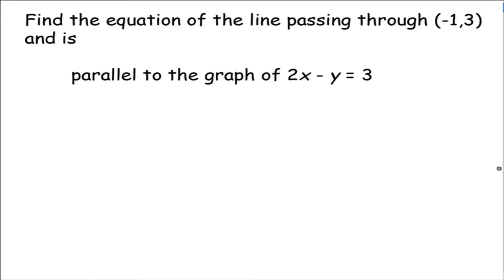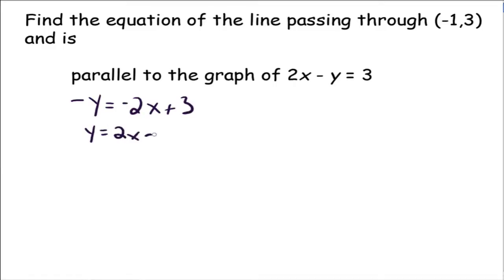Let's try another one: find the equation of the line passing through (-1, 3) where our line is parallel to the graph of 2x minus y equals 3. When two lines are parallel, their slopes are equal — they have the same slope and go in the same direction. So if we find the slope of that line, we automatically know the slope of the line we're looking for. We write 2x minus y equals 3 in slope-intercept form by isolating y: subtract 2x from both sides, then divide by negative 1, giving y equals 2x minus 3. So the slope of this line is 2, which means our slope is also m equals 2, because we want these two lines to be parallel.